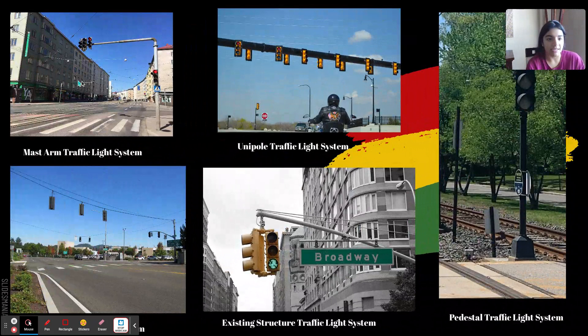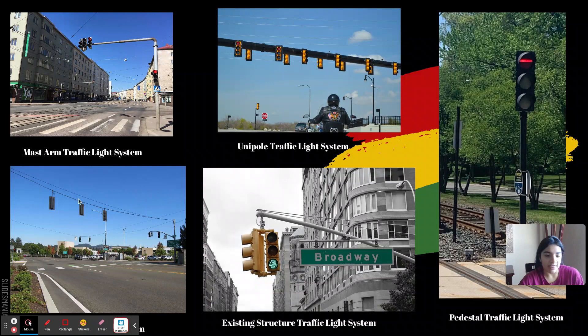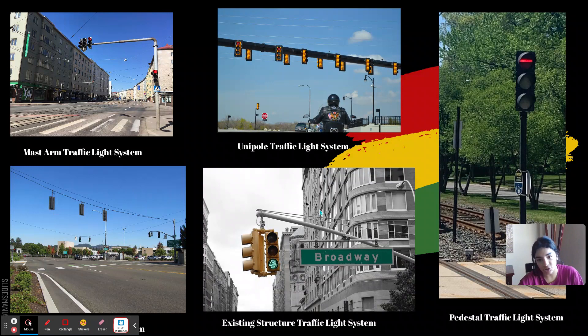The mast arm traffic light system is just an arm at a right angle. The uni pole traffic light system works similarly. The pedestal traffic light system is just a small light. Then we have the strain pole system, which is hung by wires. The polycarbonate traffic lights are used on the signal wires to prevent breaking or being too heavy. And then the existing structure traffic light is just built off structures that already existed. These are just different style arrangements of traffic light systems that you've probably seen all around town.